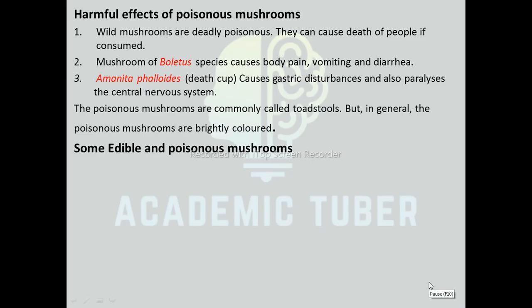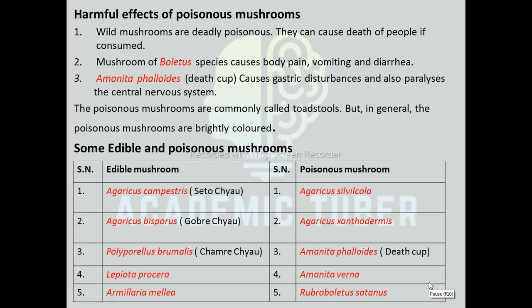Some examples of edible mushrooms: Agaricus campestris, Agaricus bisporus. These are examples of some edible mushrooms. Examples of poisonous mushrooms: Agaricus xanthodermus, Amanita phalloides (death cup), Amanita virna, Rubroboletus satanas.